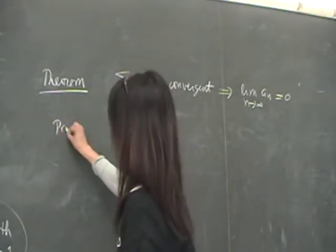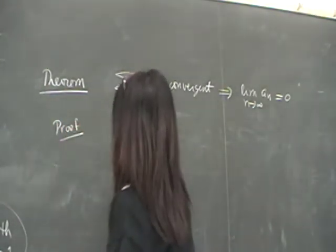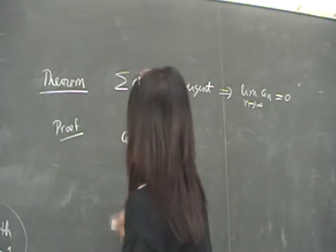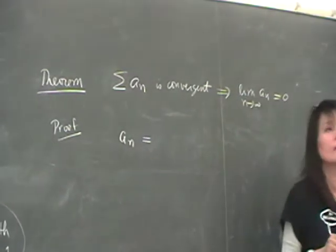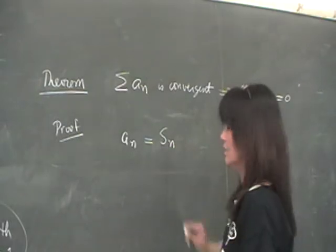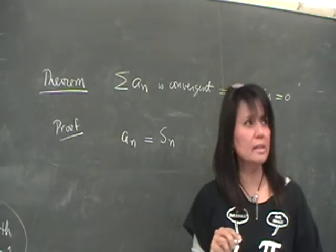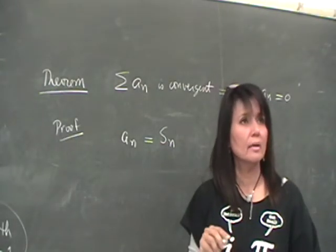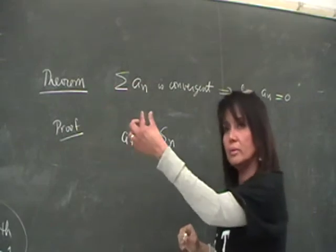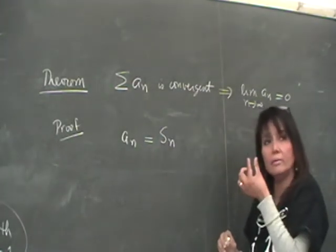Let's just take a look at the proof of this. It's very short. How do you get A sub N? If you subtract S sub N, what is S sub N? It's A1 all the way to A N, right?